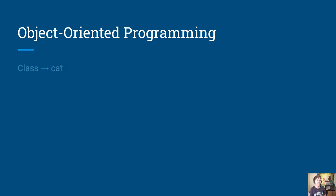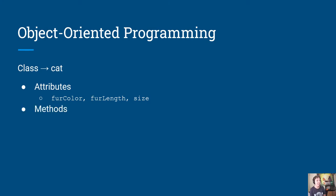I'm going to start with a really simple demonstration using a class for a cat. A cat could be a type of object that has attributes like its fur color, the length of its fur — is it short hair or long hair — and its size. I'm going to use the height of the cat in inches to represent the size. Then the methods are the behaviors of the cat, so we could have methods like meow, run, or eat. I'm just going to start with meow to keep things simple.